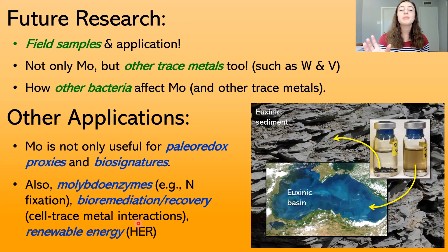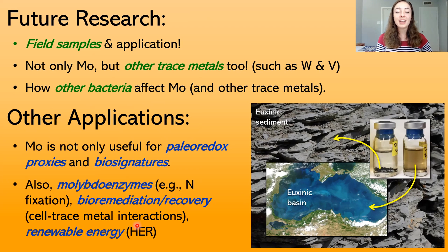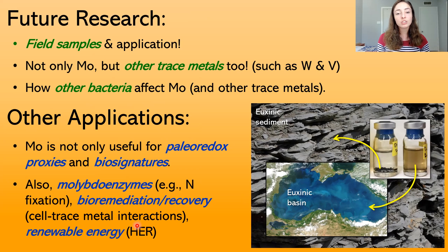Lastly, molybdenum sulfides are becoming really important for catalyzing the hydrogen evolution reaction (HER), a reaction in which molecular hydrogen is produced and can be used for renewable energy. This could be really important in the near future. Specific molybdenum sulfide species do a better job at this than others, so understanding how molybdenum sulfide species can differentiate is also really important for this application.